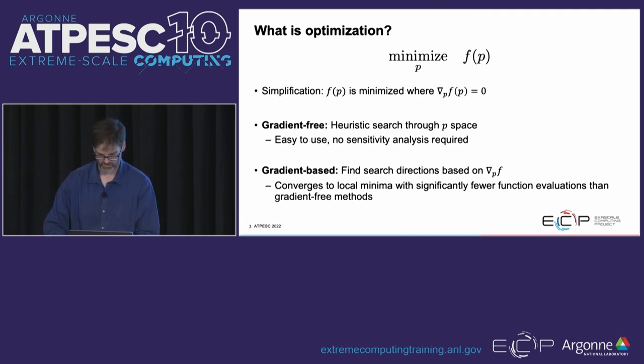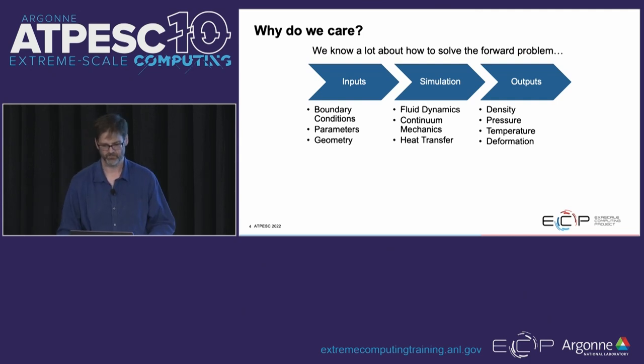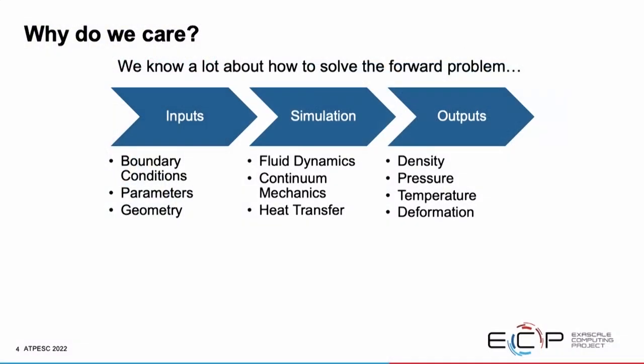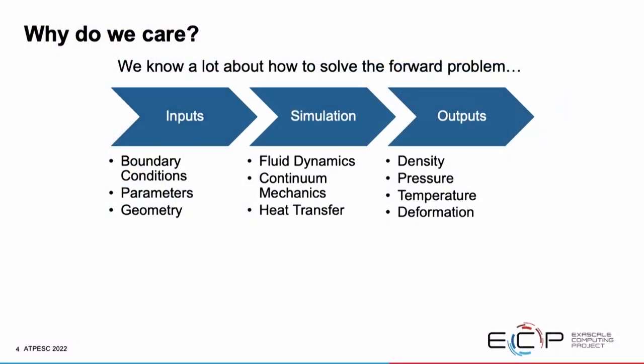Why do we really care about optimization? Our PDE has a bunch of inputs—boundary conditions, parameters, your geometry. You discretize it and apply a system of equations, solve a nonlinear system, and get an output from the simulation to which you apply some figure of merit—distribution of densities, vorticity, all kinds of outputs. That's the forward problem: it starts from the inputs for the simulation, goes through all these steps, solves the simulation, gets the outputs, and calculates the quantities we're interested in.